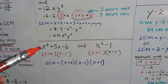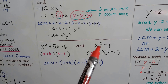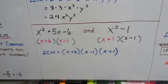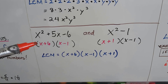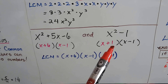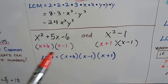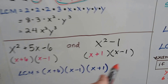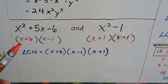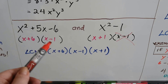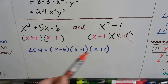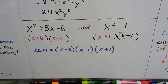This next example is probably the best for what I'm trying to explain. We have a trinomial x² + 5x − 6 and a binomial x² − 1. This is where your factoring skills come in. The trinomial factors as (x + 6)(x − 1), and x² − 1 factors as (x + 1)(x − 1). Since there's already an (x − 1) in the first factoring, we don't use it again. The unique factors are (x + 6), (x − 1), and (x + 1) — those are the ones we use, and that's the least common multiple.